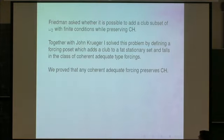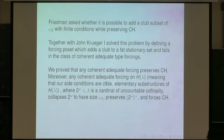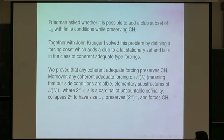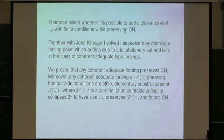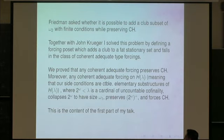We proved that any coherent adequate forcing preserves CH, and moreover something stronger: any coherent adequate forcing on H_lambda — meaning our side conditions are countable elementary substructures of H_lambda — collapses 2^omega to have size omega_1, but it preserves the successor of 2^omega and forces CH.